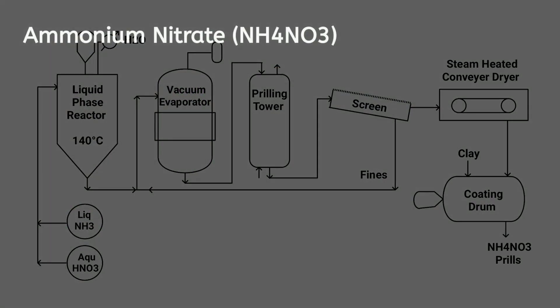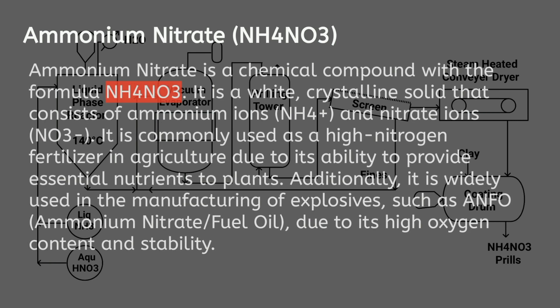Ammonium nitrate is a chemical compound with the formula NH₄NO₃. It is a white crystalline solid that consists of ammonium ions and nitrate ions. It is commonly used as a high nitrogen fertilizer in agriculture, and is also widely used in the manufacturing of explosives such as ANFO (ammonium nitrate fuel oil) due to its high oxygen content and stability.